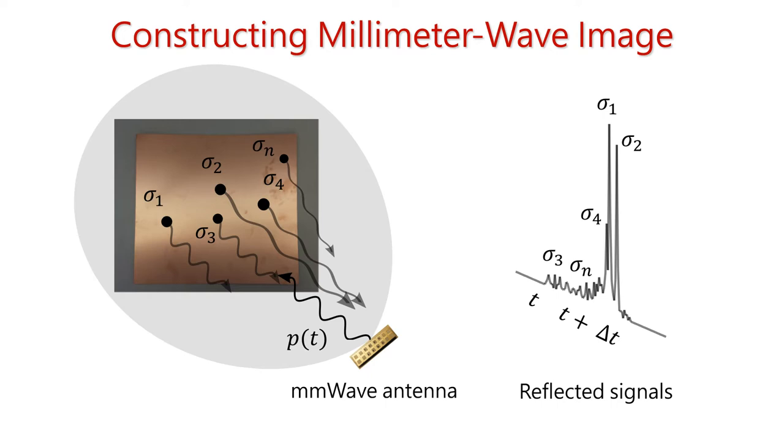Because each of those points are at a little different distance from the millimeter wave antenna, some reflections will arrive early and some will arrive late. If we can somehow measure the strength of those reflections at each different point, we will have a millimeter wave image. But here is the challenge. The object is in two dimensions, but the measurement is in one dimension.